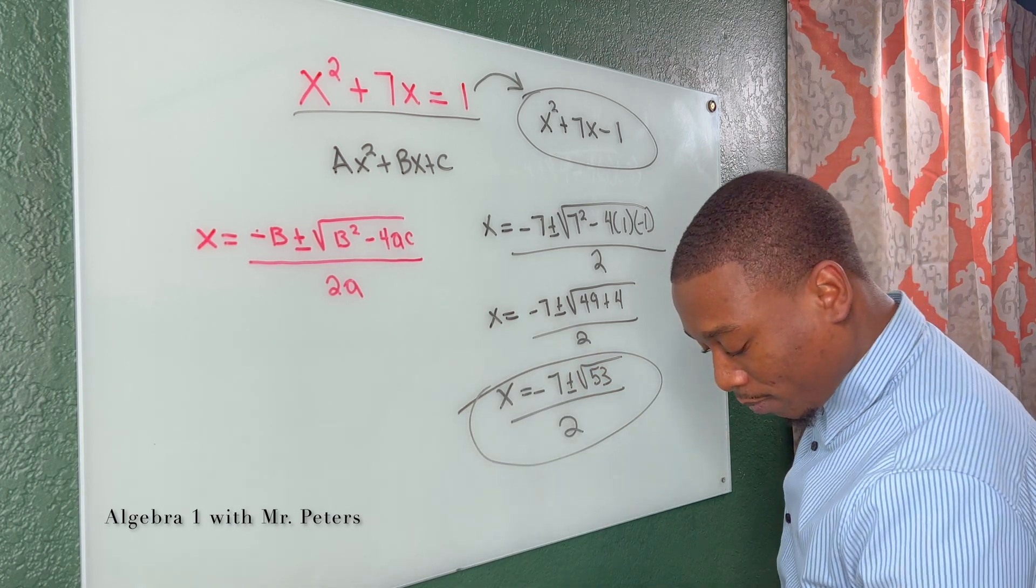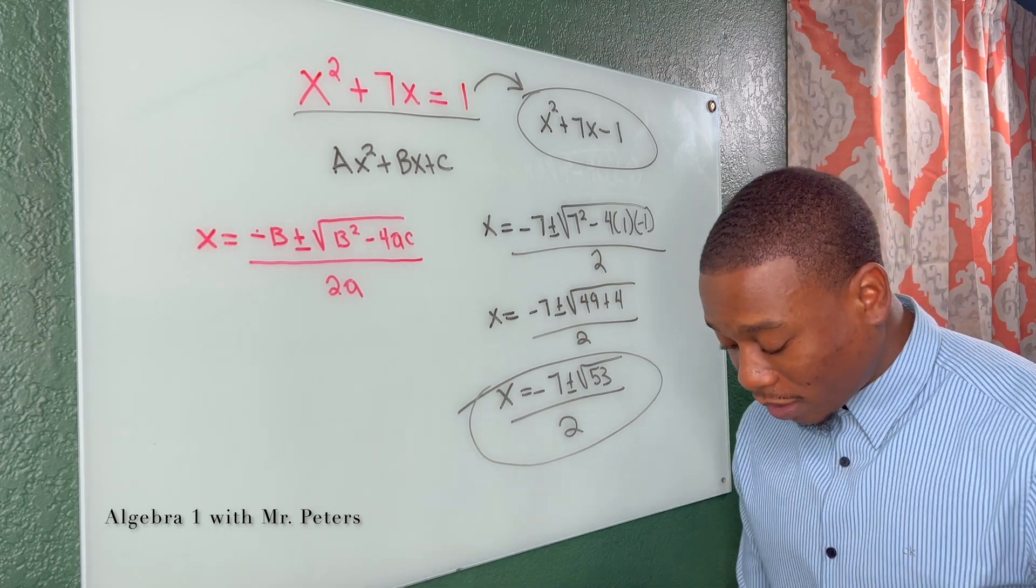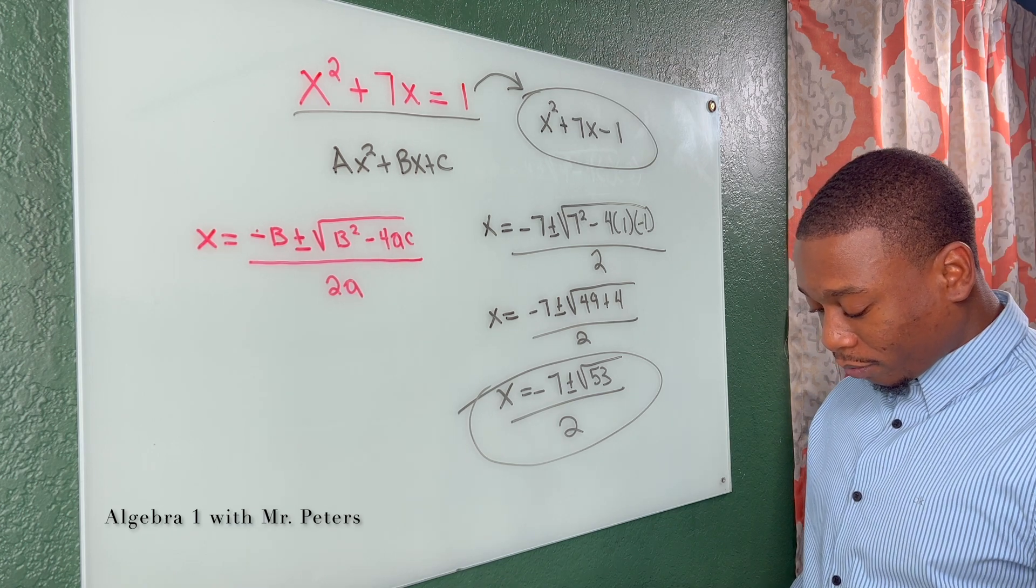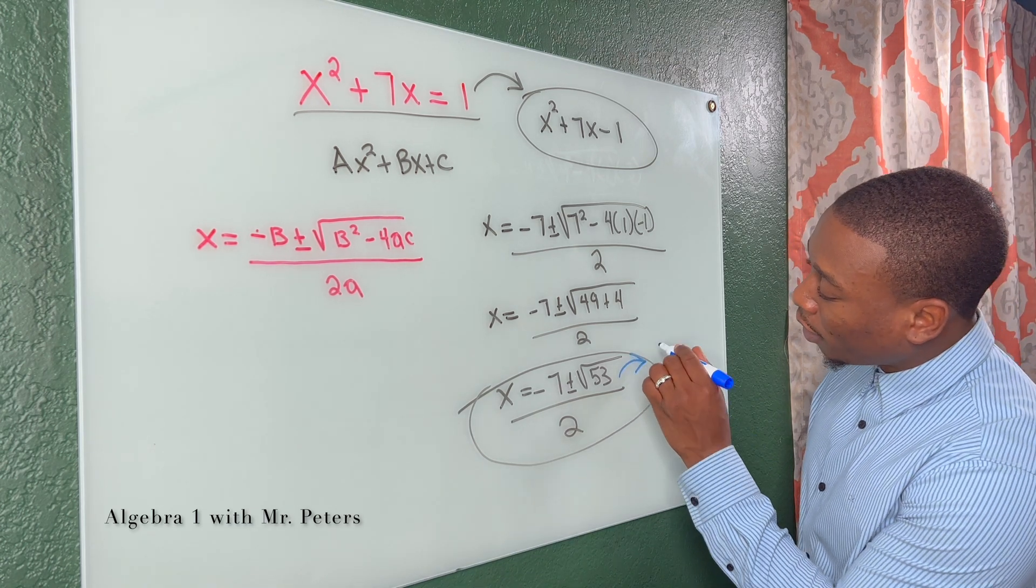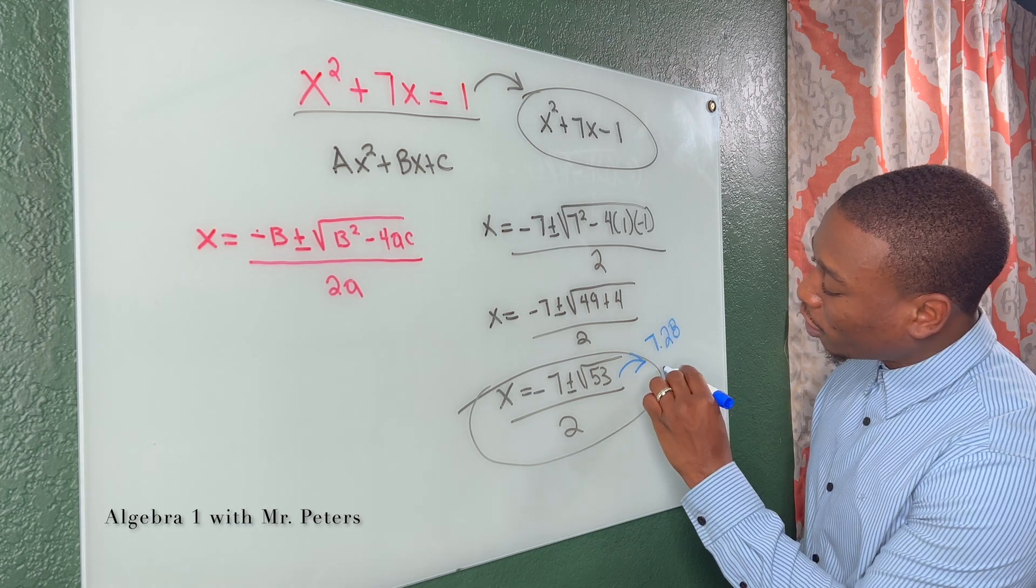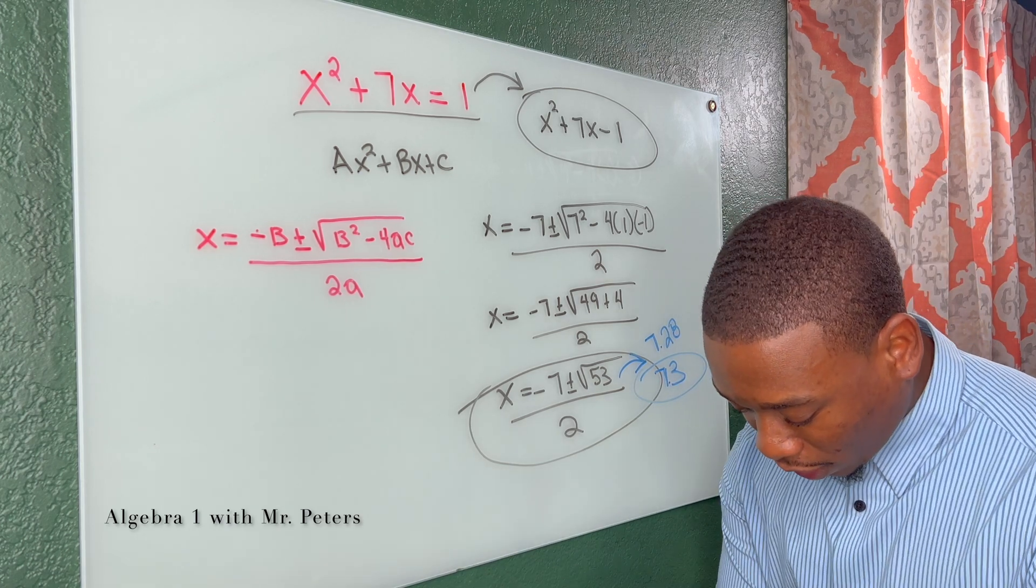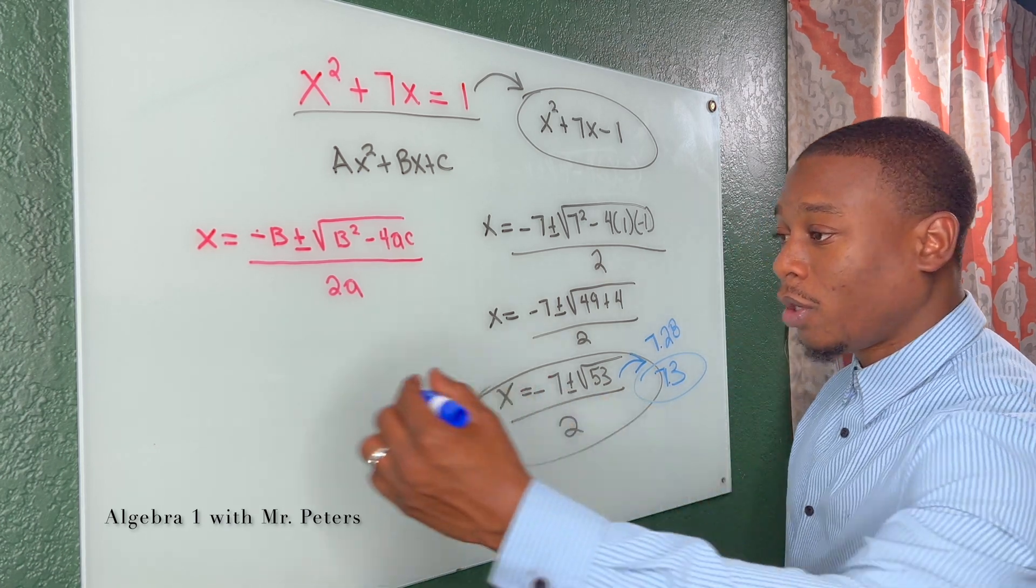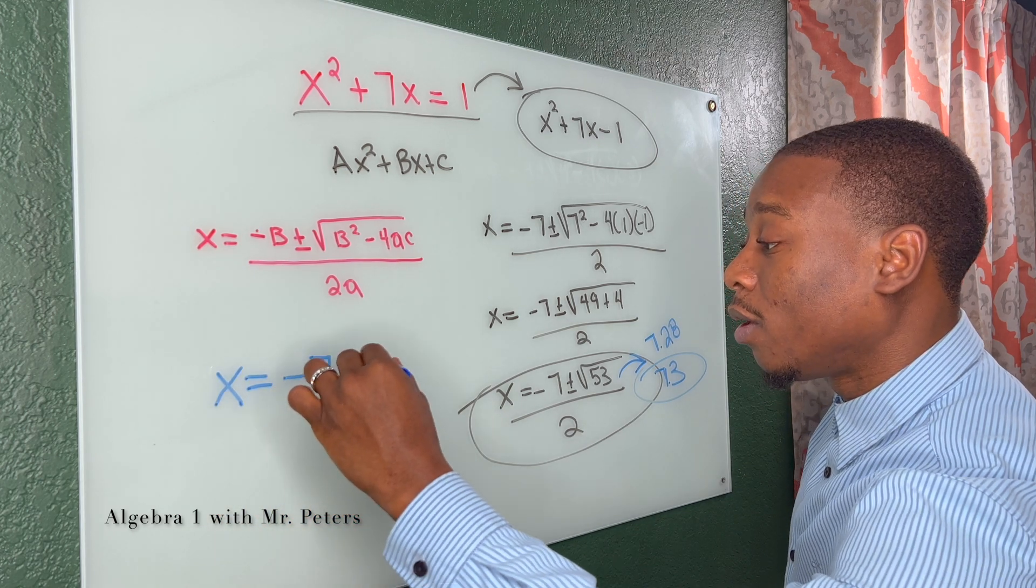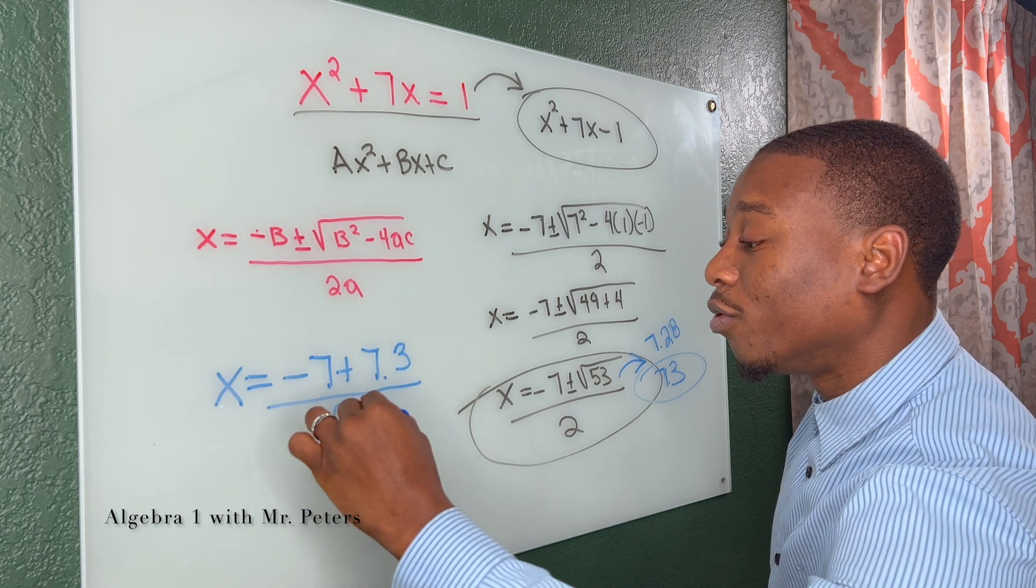So now this is the most important part. Why? Because we're not able to solve. And for us to solve, we need to get this decimal for the square root of 53. So what we're going to get is 7.28. So let's just call this 7.3. So now with that, this is what we're going to do. We go back, we set it up again. X is equal to negative seven plus 7.3 over two.